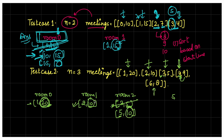Now 6,8 arrives. Two rooms have the same end time (10). Since end times are equal, we pick the lowest room number. We wait for that room to free, so this meeting is delayed — it starts at 10 in room 0 (lowest room number among those ending at 10), runs for 2 hours, and ends at 12.